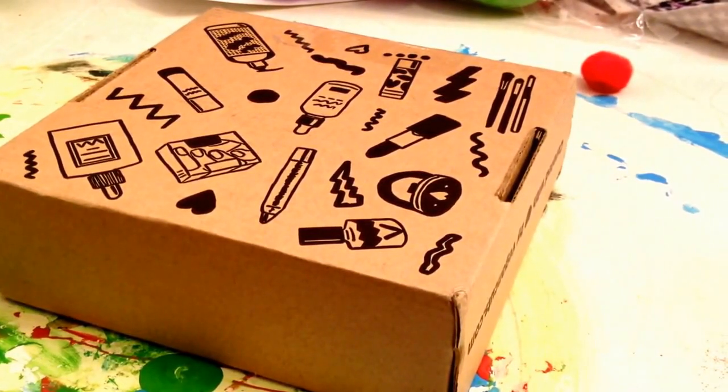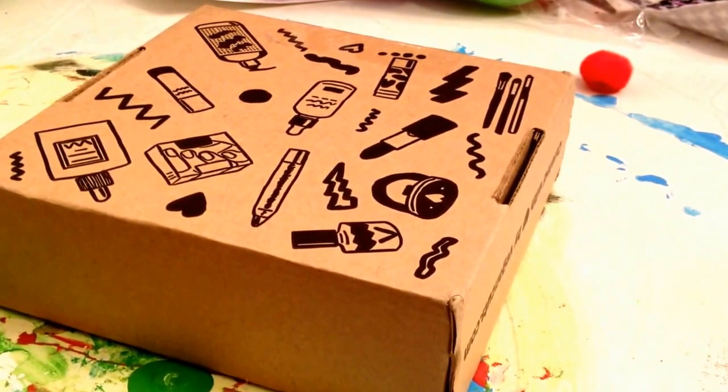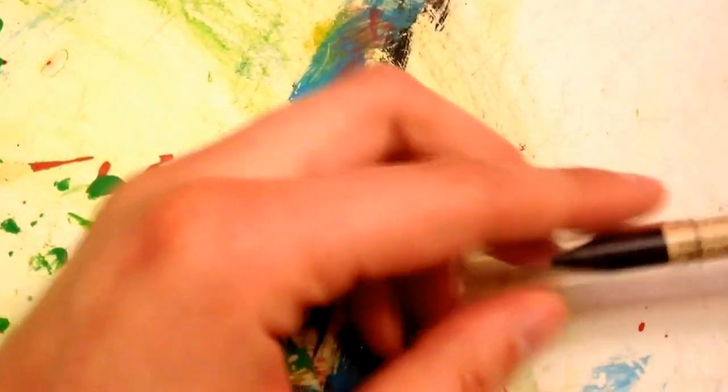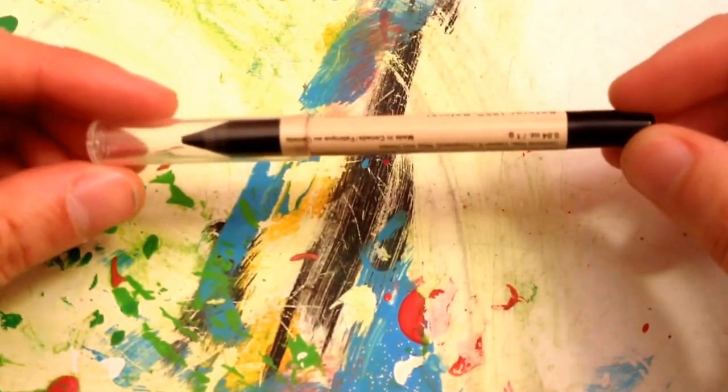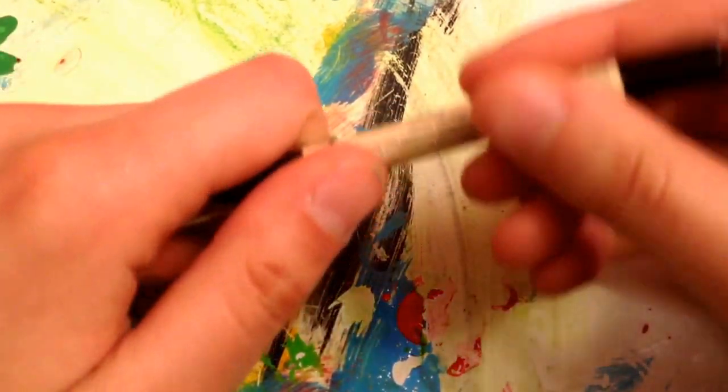I am back with the March Beauty Box from Vegan Cuts, so let's just get right into it. First off, we have this black mineral pencil. It just says pencil, but we're pretty sure it's an eye pencil.